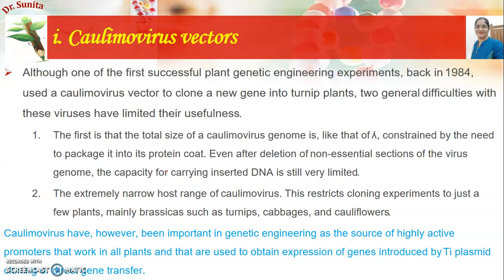The first is caulimovirus. Although caulimovirus was used in the first successful plant genetic engineering experiment in 1984, it has two major problems. First, total genome size is a constraint — since the protein coat must package the genome, as with lambda phage, if non-essential sections are deleted, the carrying capacity is very limited. Second, the host range is very narrow, limited to specific plants such as Brassica and cauliflower. Despite these limitations, caulimovirus is important in genetic engineering because it is a source of highly active promoters that drive gene expression in plants.